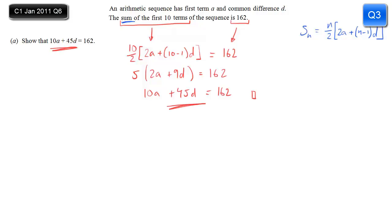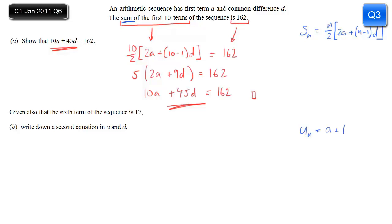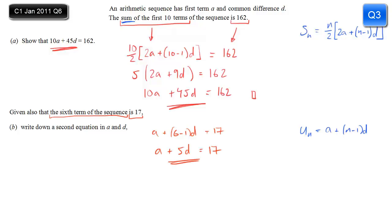Part B. We're given the sixth term, so now we're dealing with a specific term, not the sum. We need the formula for a particular term: a plus (n minus 1)d. The sixth term is a plus (6 minus 1)d, and it equals 17. So now we've got our other equation, and 6 minus 1 is 5.